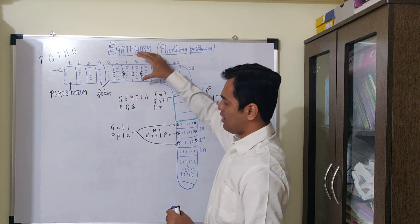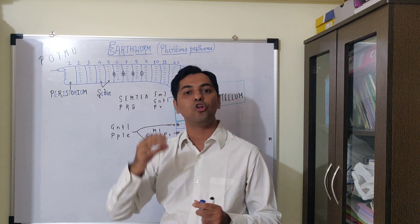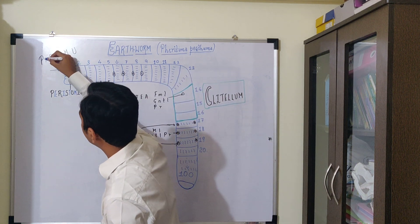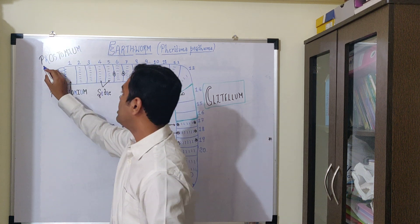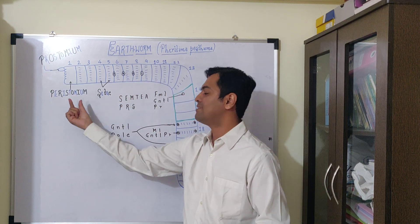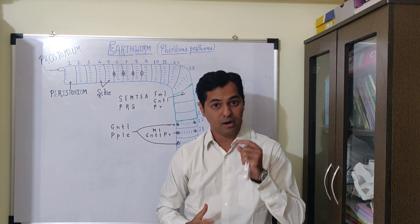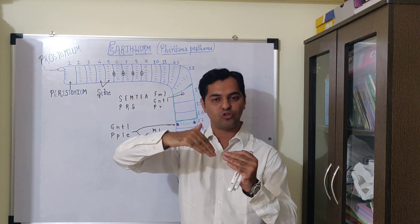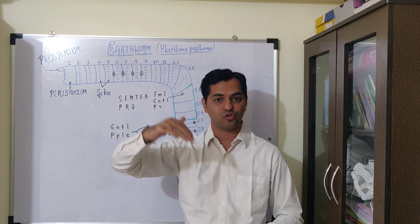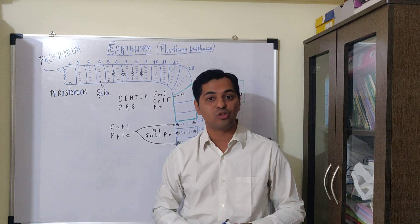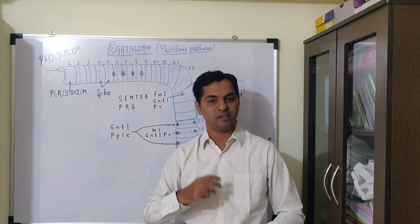From the lateral view, the first segment has a fleshy extension known as the prostomium. The lobe is the prostomium; the first segment is peristomium. Prostomium's function is mainly sensory. It creates a wedge into the soil, helping break open soil particles for burrowing. That's why earthworm is called friend of the farmer. We utilize it for vermicomposting; it increases fertility.